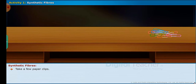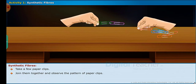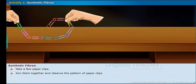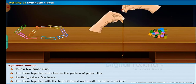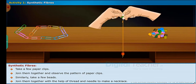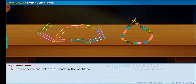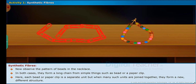Take a few paper clips, join them together and observe the pattern. Similarly, take a few beads, join them together with the help of thread and needle to make a necklace, and observe the pattern of beads. In both cases, they form a long chain from simple things such as a bead or paper clip. Each bead or paper clip is a separate unit, but when many such units are joined together they form a new, different structure.